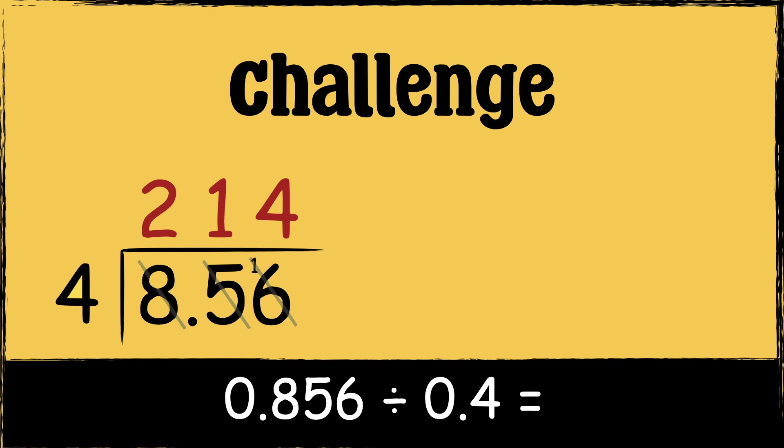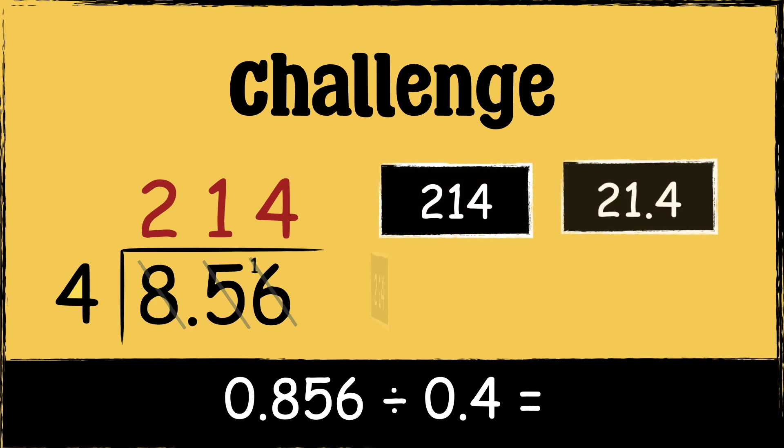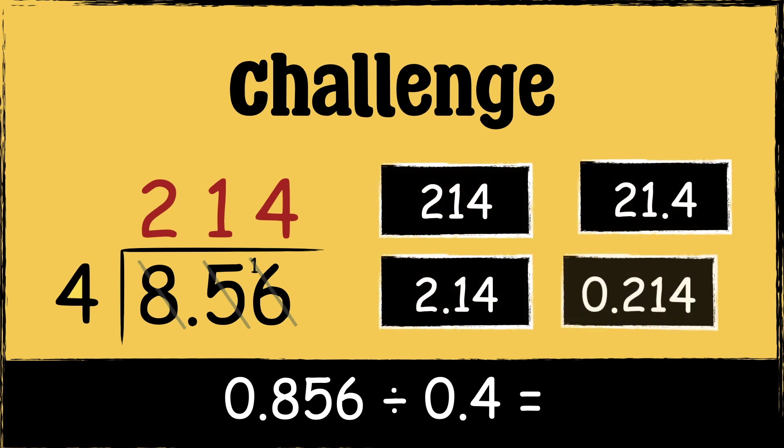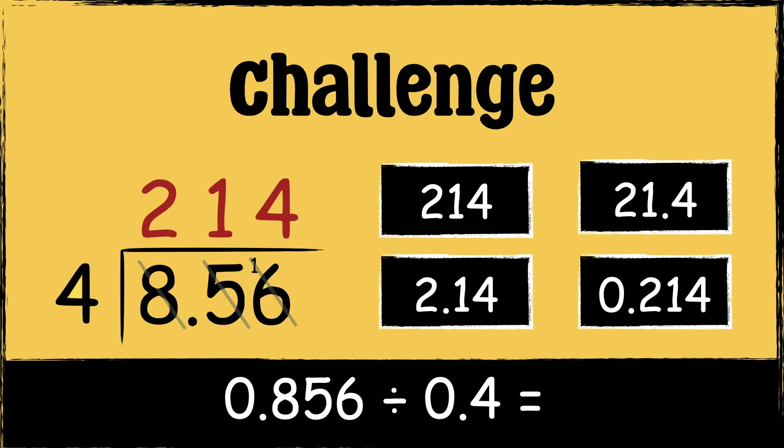Now it's your turn. I've already done the bus stop method to calculate 0.856 divided by 0.4. All that's left to do is to put the decimal points in the correct place. Which of these answers is correct? Let me know your answer in the comment section.